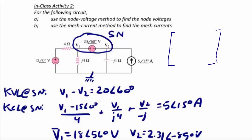And if you create the matrix, the first column is the coefficient on V1. The second column is the coefficient on V2. The first row is the first equation. The second row is the second equation.